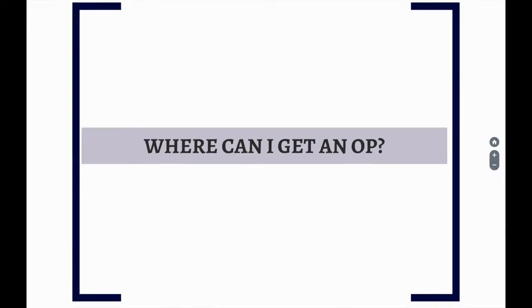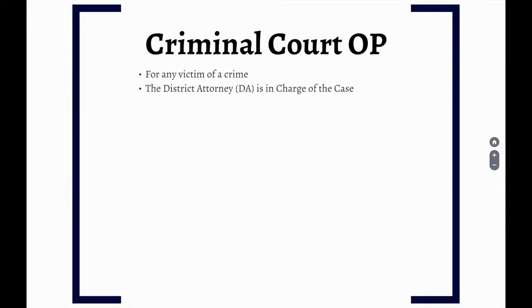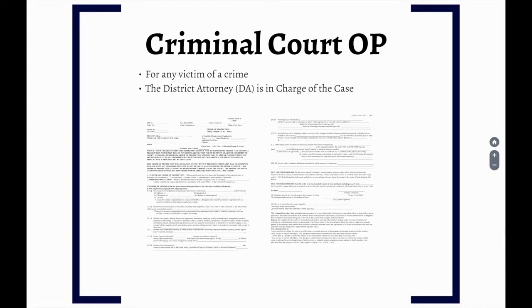Where can I get an order of protection? In New York State, Family Court, Supreme Court, and Criminal Court have concurrent jurisdiction over orders of protection. This means, for example, that a person can have an order of protection from criminal court and an order of protection from family court at the same time regarding the same incident. Criminal orders of protection can be issued generally for victims of a crime, regardless of who the perpetrator is — this is not true for family court orders of protection. When it comes to criminal orders of protection, the district attorney is in control of whether or not to issue an OP and when that OP should end.